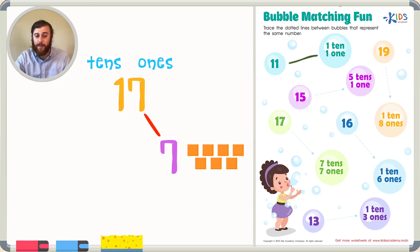In the tens place we have the number 1 again, and again that represents 1 ten. We could also show this with 1 long, or 10 individual cubes. This could also be written as the number 10.